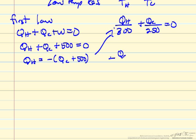Minus QC plus 500 over 300 plus QC over 250. This equals zero.